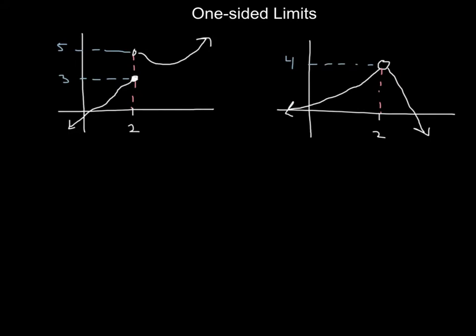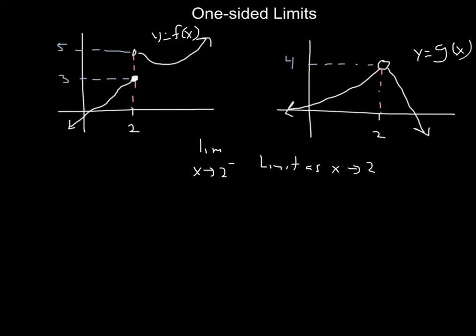One of the things we'll use when working with limits is the idea of a one-sided limit — as I come from one direction, either the left or the right, what function value am I approaching? If I want the limit as x approaches 2 from the left, it uses a minus sign superscript, meaning we approach 2 from the left. If it has a plus sign superscript, that's the limit as x approaches 2 from the right.